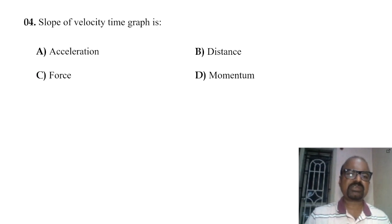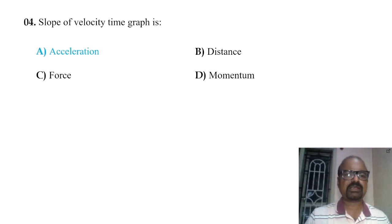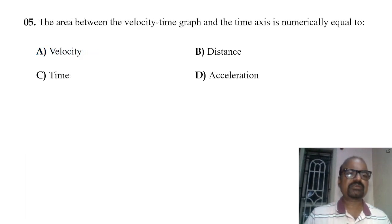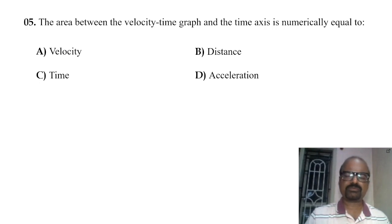The slope of the velocity-time graph gives the acceleration. The area between the velocity-time graph and the time axis is numerically equal to the displacement.